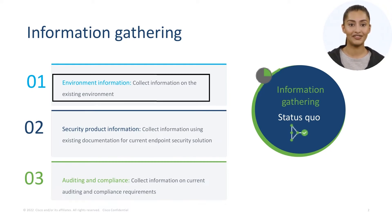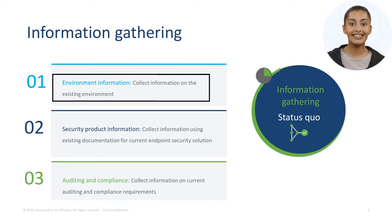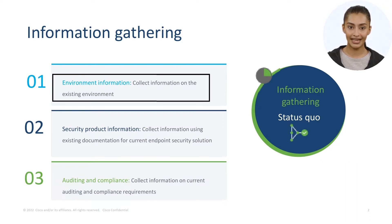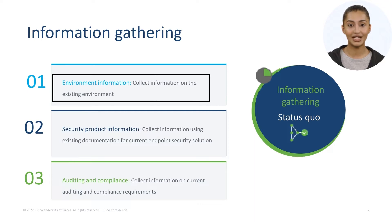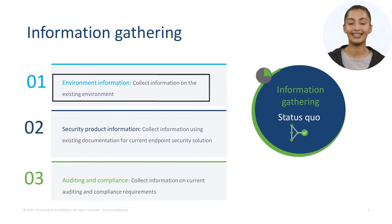The first set of questions pertain to gathering information about the existing environment. For example, these could be: the number of endpoints in the deployment, what operating systems are in your environment, what are the mission critical systems in your organization, how do you deploy software in your organization, whether there is a proxy present, and so on.